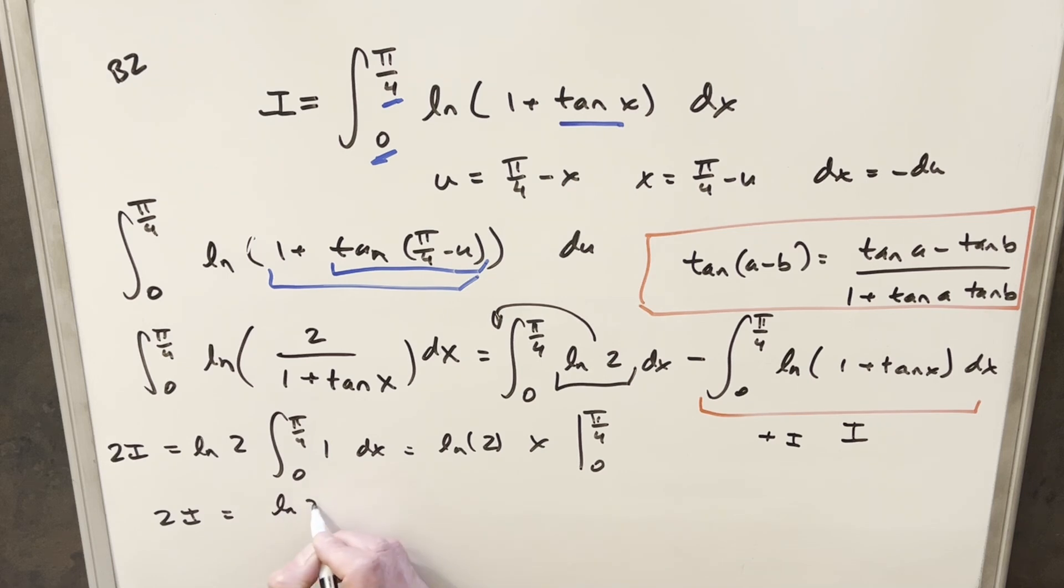So we're going to have natural log of 2 times π/4. We just need to divide. We have two copies, so let's just divide both sides by 2. And so for our final solution, we're going to have just π natural log of 2 over 8. So that's it. UNSW 2020 B2. Thanks everyone for watching. Have a good day.